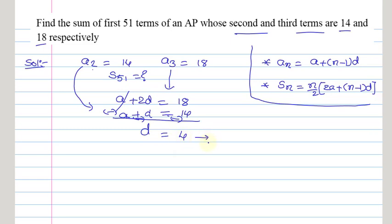Now we got D value as 4, so we need to substitute this D value in A2. We know that A2 is A plus D equals 14. We just found the value of D as 4, so substituting this value, we can write A plus 4 equals 14. From this, A equals 14 minus 4, that is 10.